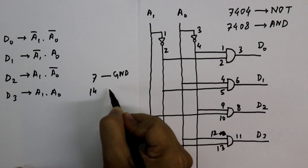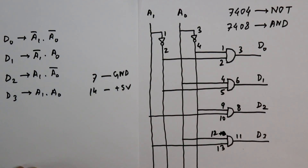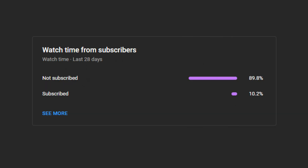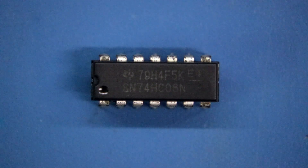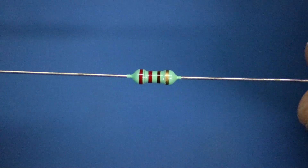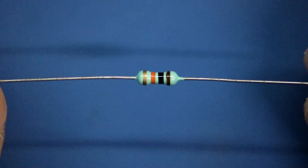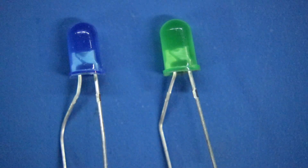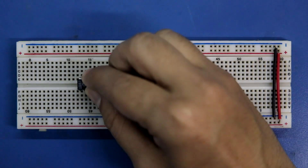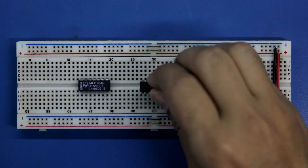Now let's see this circuit on the breadboard. One request: please consider subscribing to my channel, this will motivate me to make more videos. For this practical I am using NOT gate IC 7404, AND gate IC 7408, 220 ohm resistors, 10 kilohm resistors, switches for input signal, and blue and green LEDs.